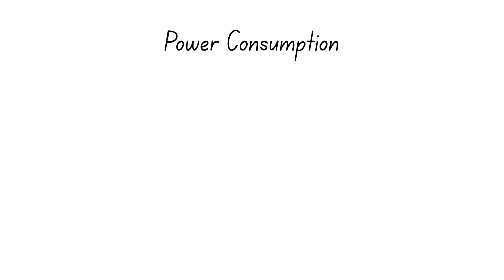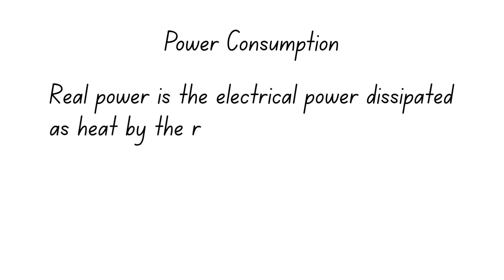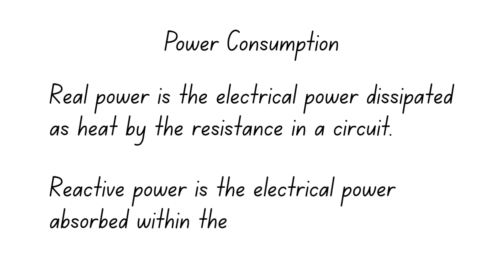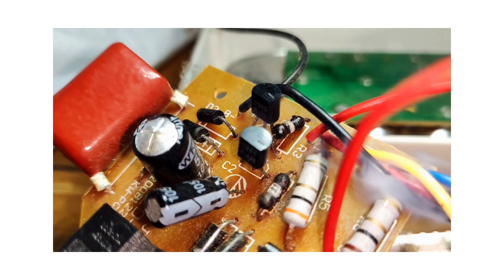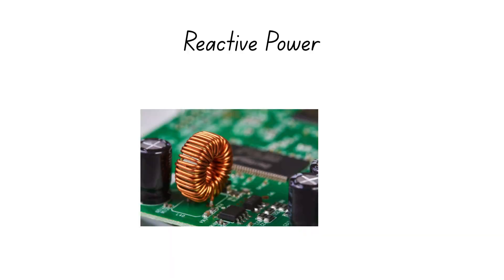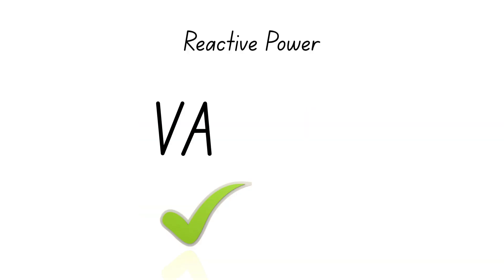Reactive circuits consume electrical power in two ways. Real power is the electrical power dissipated as heat by the resistance in a circuit, while reactive power is the electrical power absorbed within the circuit, as the capacitors and inductors energize. Reactive power is not lost, but is released back into the circuit at a later point in time, while real power is lost as heat. So, reactive power is measured in volt amps, and not watts. This is simply meant to show that the power is not permanently lost.